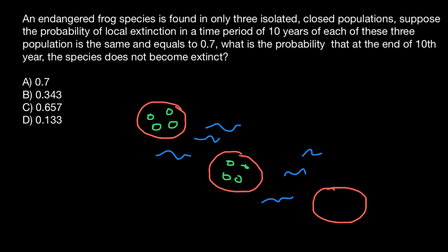On each island we have the same species of frogs which are endangered and are on the edge of extinction. And the probability, for example, for the island number one, that in ten years these frogs would go extinct would be 0.7 or we can also say 70%.